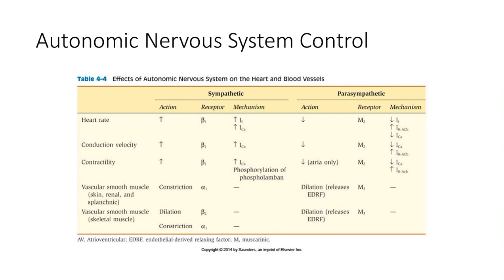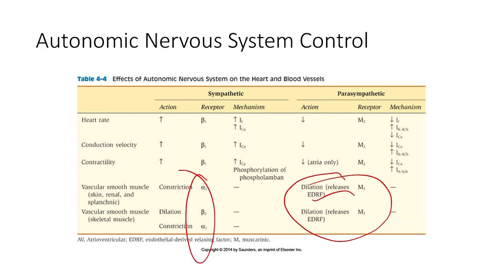A graph shows the roles of the parasympathetic and sympathetic nervous systems on different aspects of the cardiovascular system. It's important to note that the parasympathetic nervous system has a very minimal, almost absent role on vascular smooth muscle tone. There is some speculation that it helps with dilation by releasing an endothelial relaxing factor, but it's not as direct as the sympathetic nervous system, which has specific alpha and beta receptors. We'll cover this more in the vascular physiology lecture. That concludes cardiac physiology.